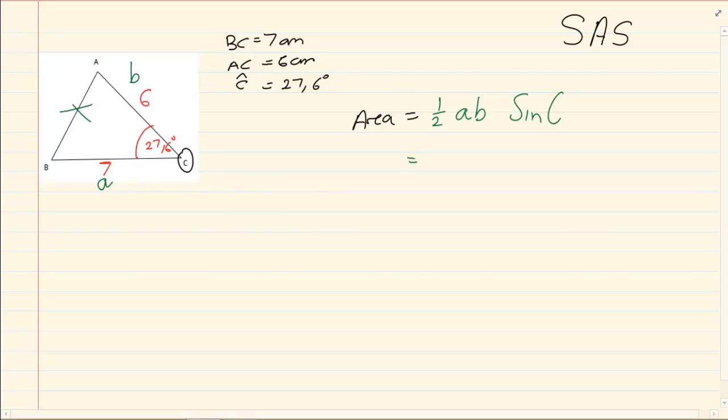Now it is simple substitution. So I am going to have half, 7, 6, sin 27.6. And then you press it in the calculator. 0.5 times 7 times 6 times sin 27.6 equals.